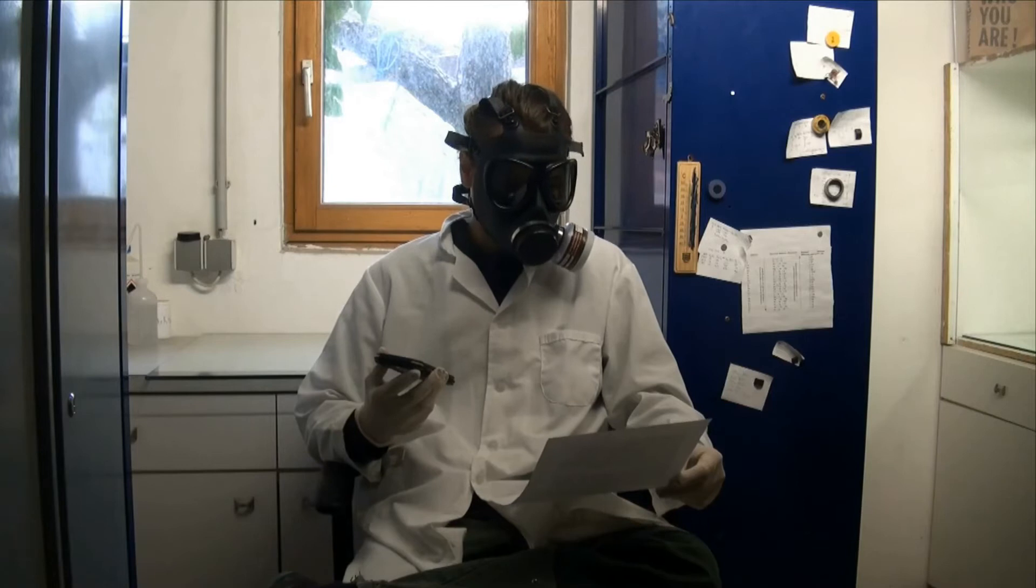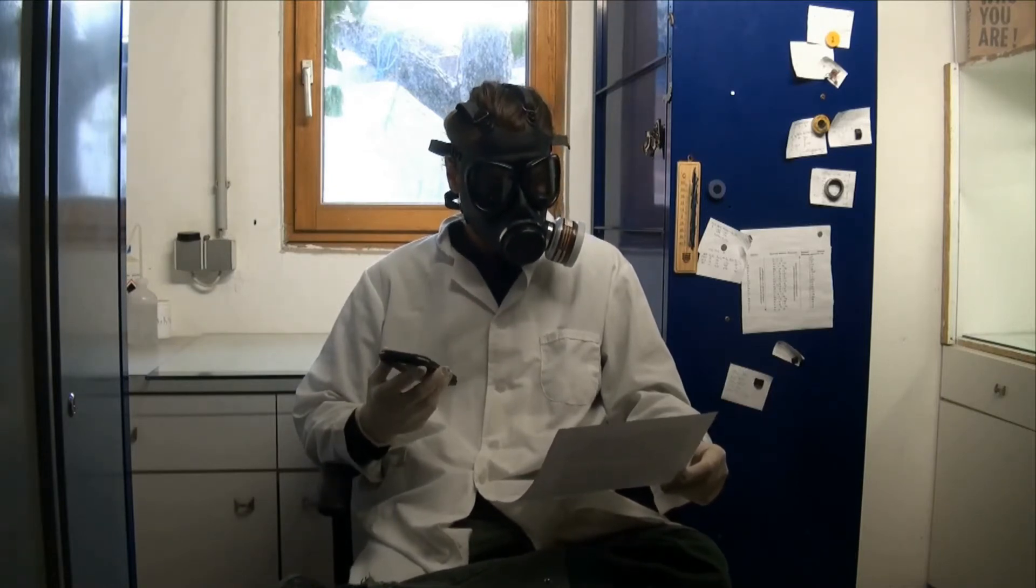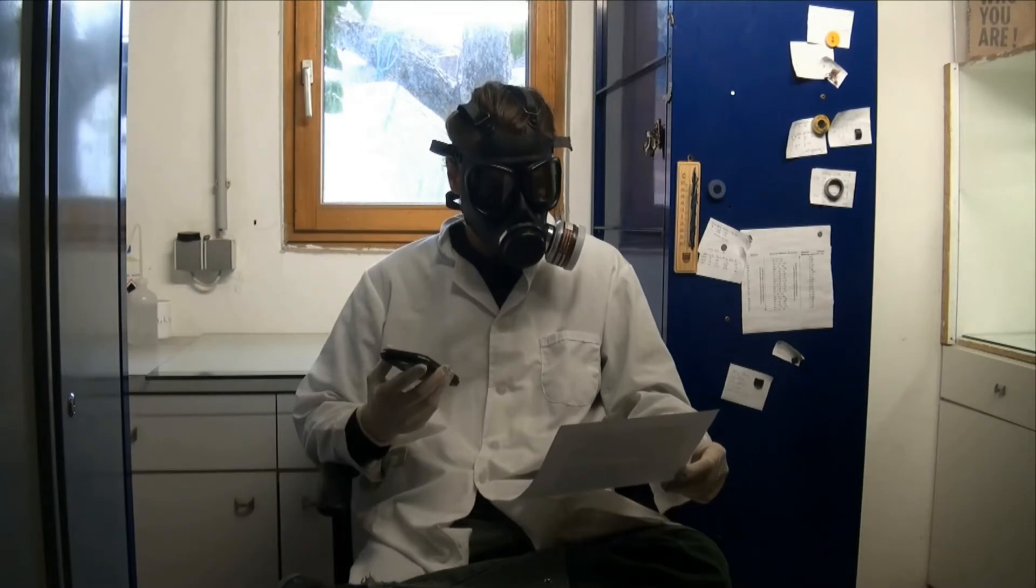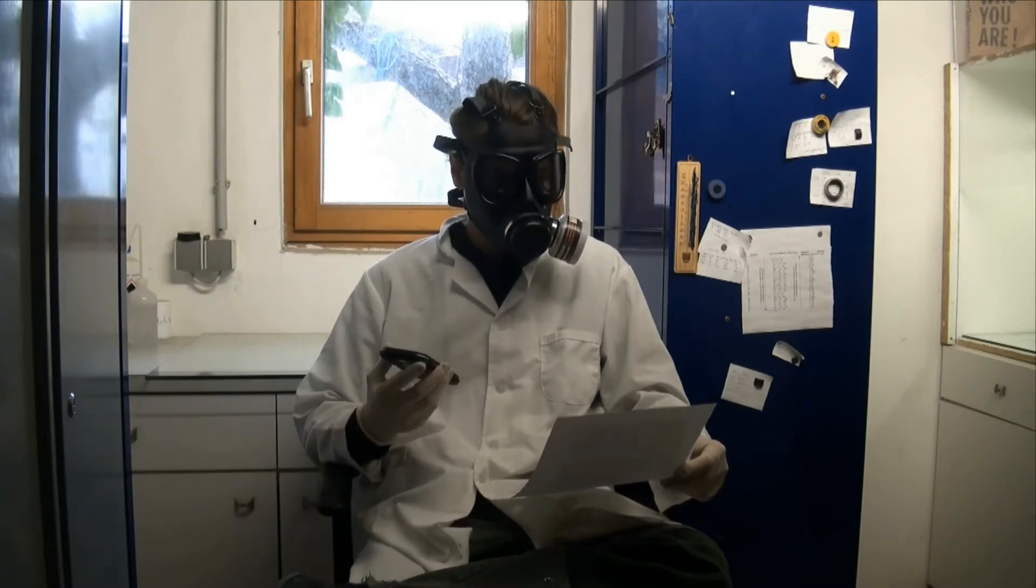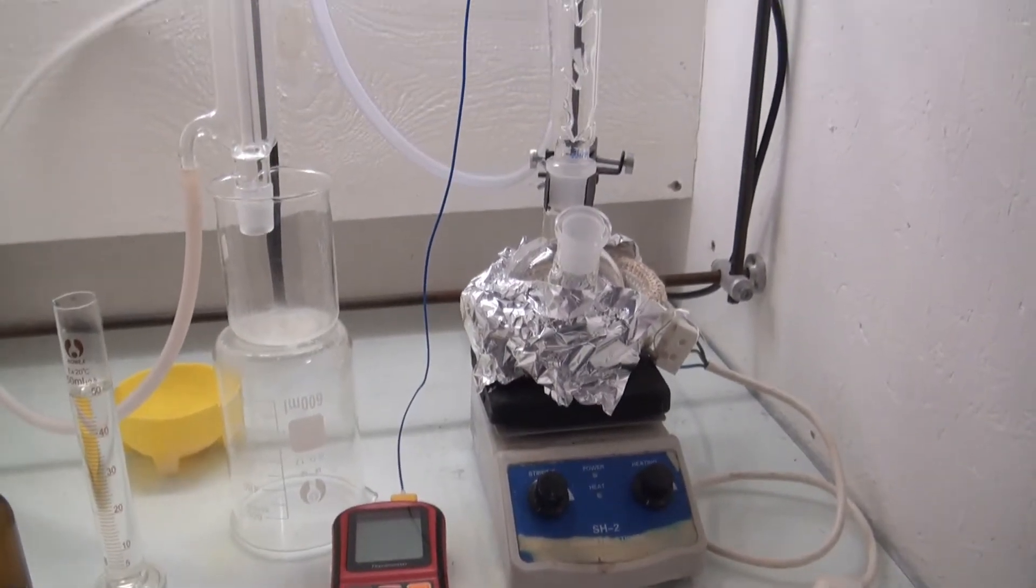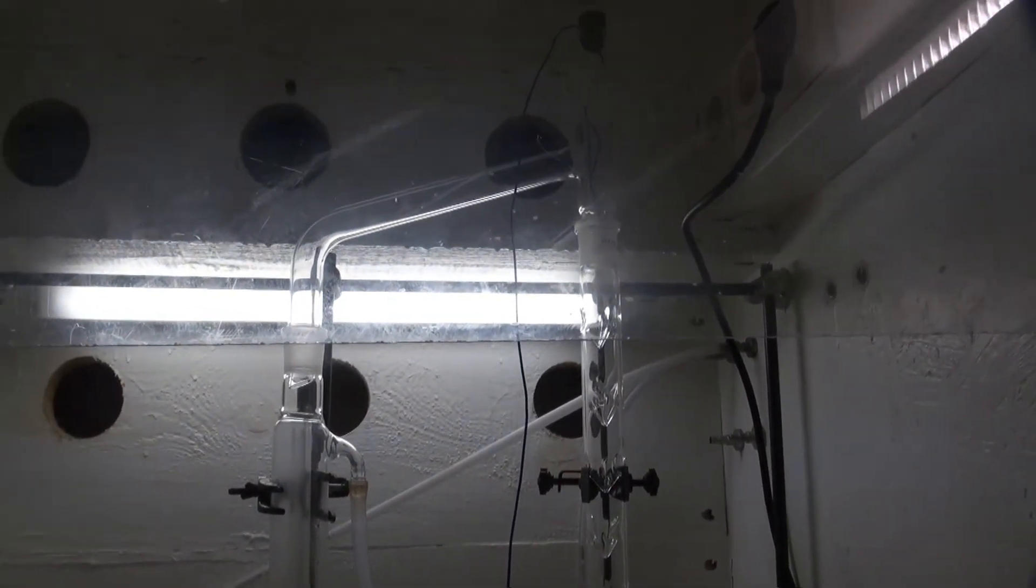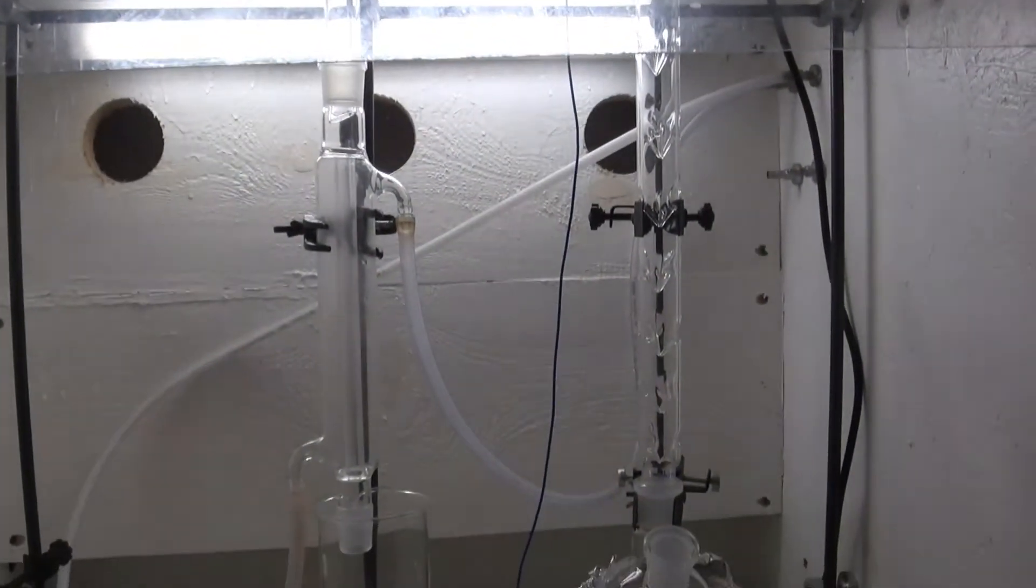From this I was able to find out that I had 115ml of 44% nitric acid. Next I set up a simple flask connected to a fractionating column with a distilling arm and a thermometer adapter. To the distillation arm a condenser was connected.